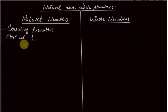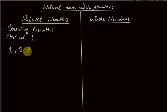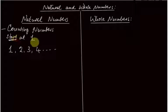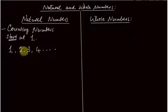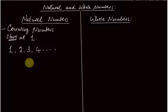Counting normally starts at one. So you say one, two, three, four, five, and so on. These natural numbers are also known as counting numbers, and counting numbers start at one. So we have one, two, three, four, five — all of them starting from one.